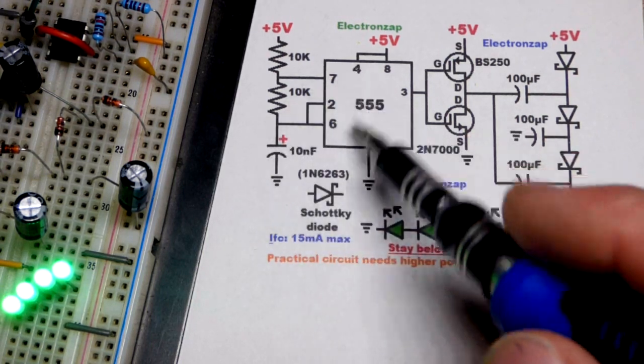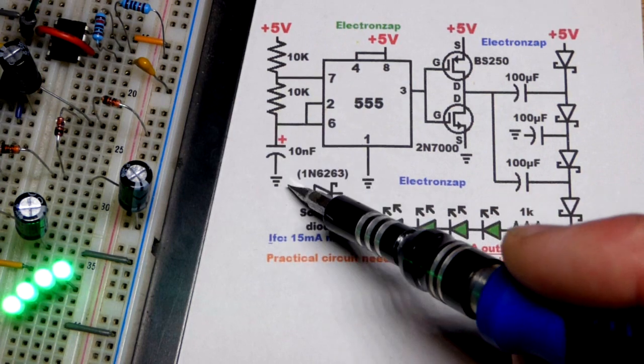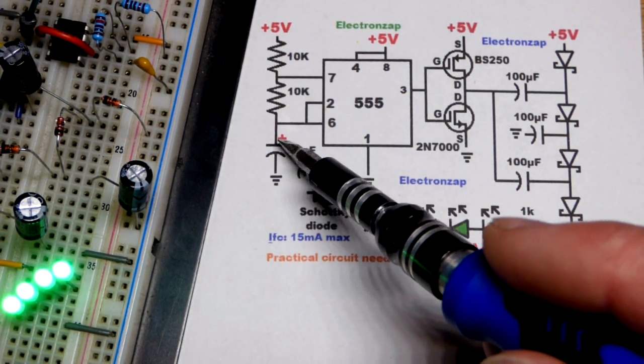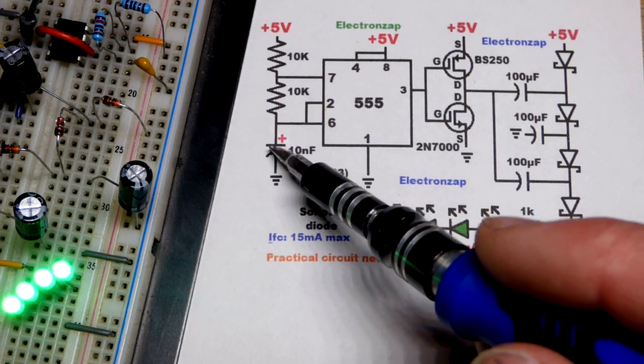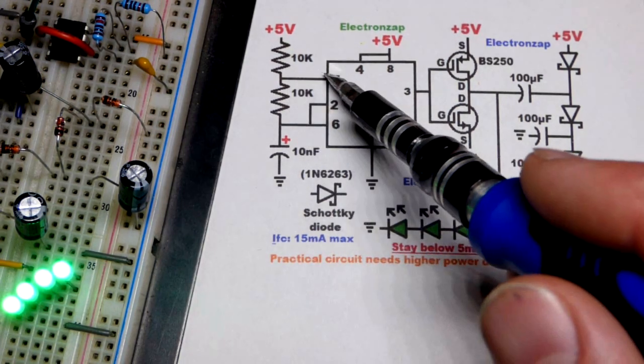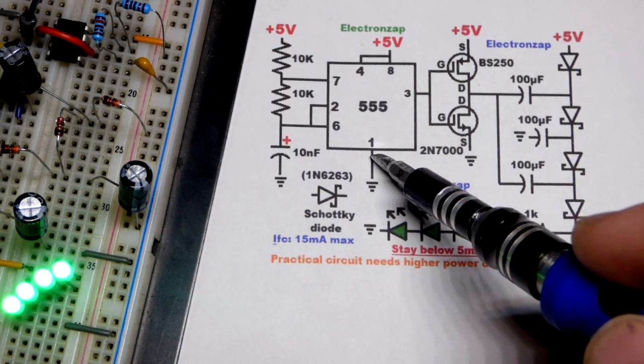555 timer in astable mode - the high time is set by two resistors, 10k resistors, and a 10 nanofarad capacitor. It's going to charge pretty close to instantly almost. And then when the output goes low it discharges through one 10k resistor, so it's going to be low for about a third of the time and it's going to be high for about two thirds of the time.